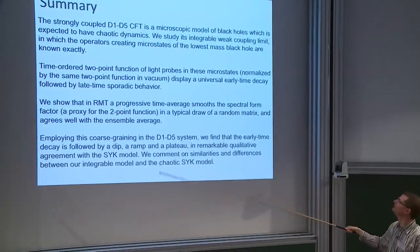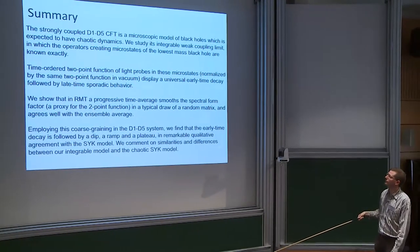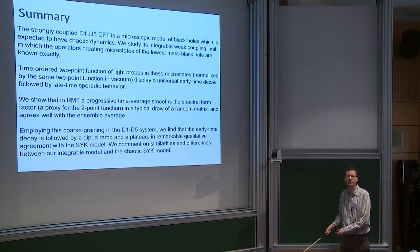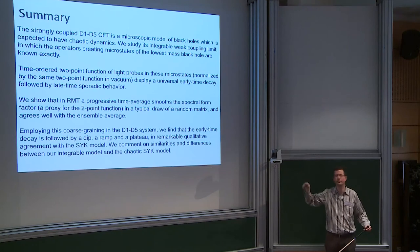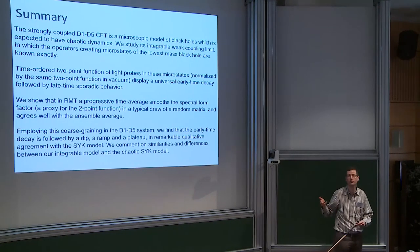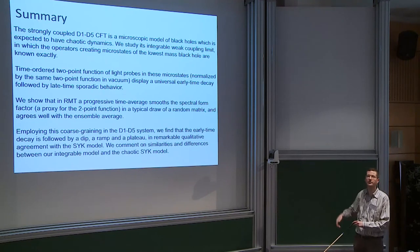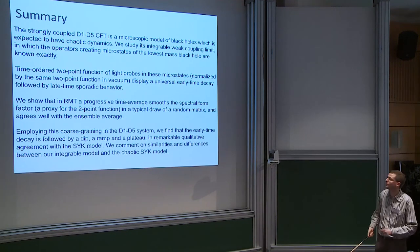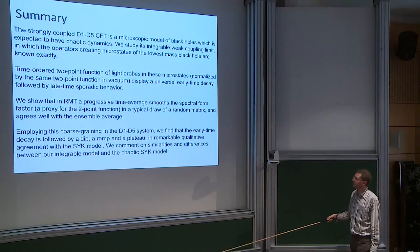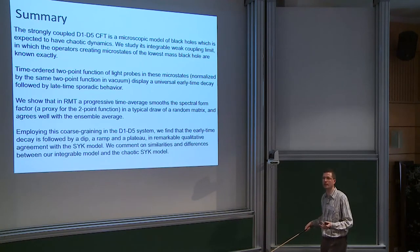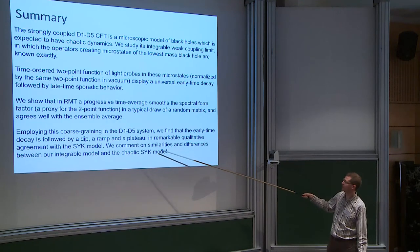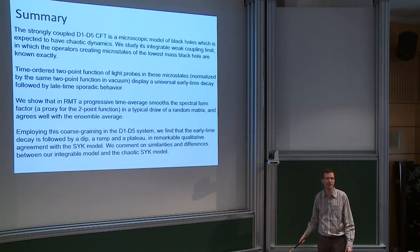To summarize: in the strongly coupled D1D5 CFT we expect black holes and chaos; we studied the zero coupling limit; we looked at two-point functions of untwisted operators and found this universal early decay followed by erratic late-time behavior; we motivated progressive time averaging by showing it works very well in random matrix theory; we applied it to the system where we had no ensemble average available; and we found a dip, ramp, and plateau structure. There is very good qualitative agreement with SYK and random matrices, but because our model is integrable rather than chaotic there are also important quantitative differences.